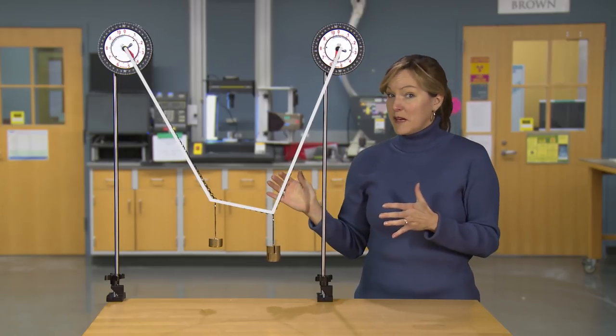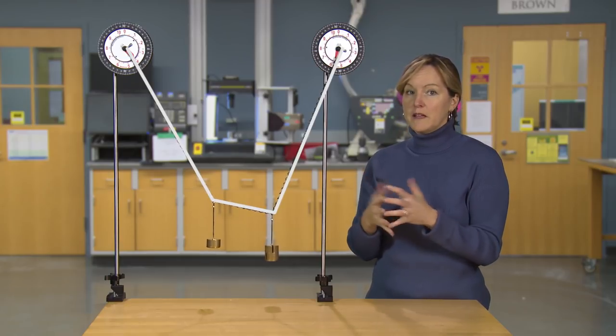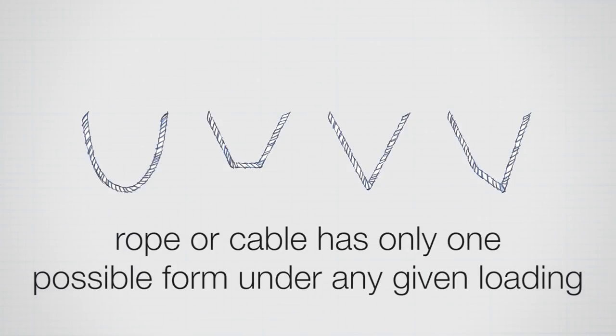My guess is you did pretty well with the matching exercise. It tends to be fairly intuitive for most people as long as you've played a little bit with ropes and cables. Why is that? The rope or cable has only one form it can take under these loads because it's all in tension. Remember the rope? We can pull on it, but we can't push on it.